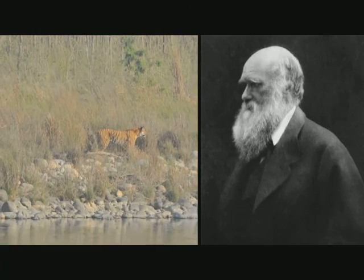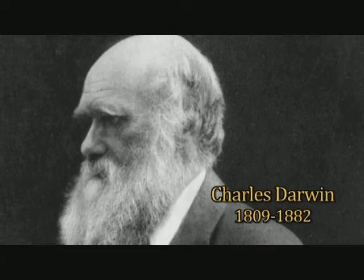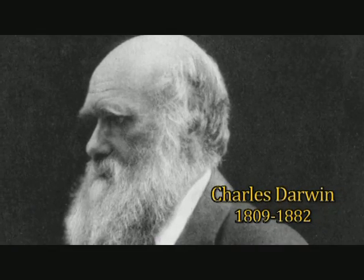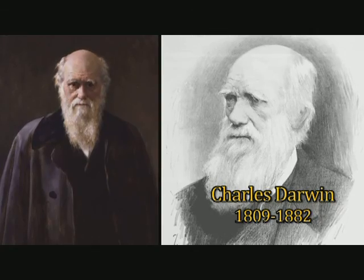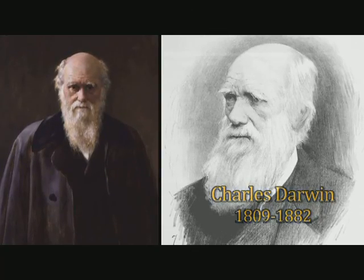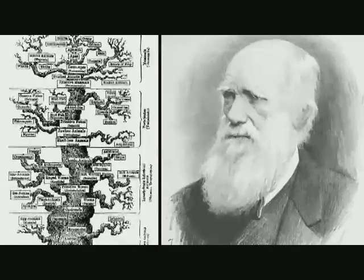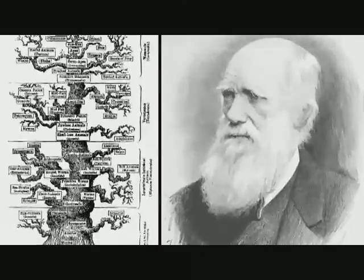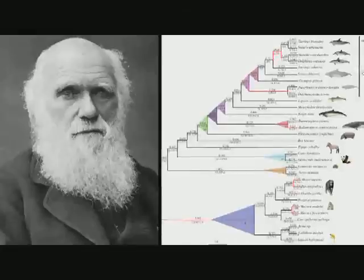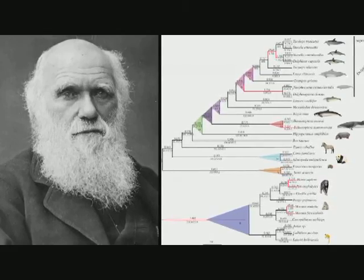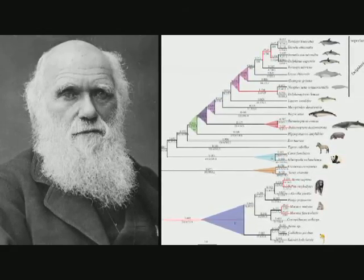Let's move away from the tiger and its stripes to Darwin. At the heart of Darwin's theory of evolution lies a beautifully simple mathematical object: the evolutionary tree. We're going to look at a group of animals and see how maths is used to reconstruct and understand the evolutionary tree.